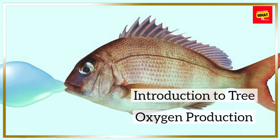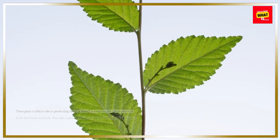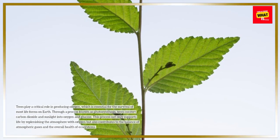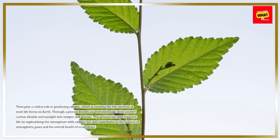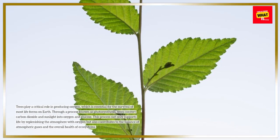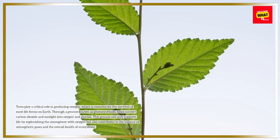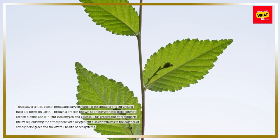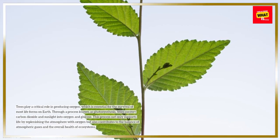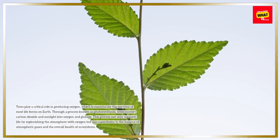Trees play a critical role in producing oxygen, which is essential for the survival of most life forms on Earth. Through a process known as photosynthesis, trees convert carbon dioxide and sunlight into oxygen and glucose. This process not only supports life by replenishing the atmosphere with oxygen but also contributes to the balance of atmospheric gases and the overall health of ecosystems.